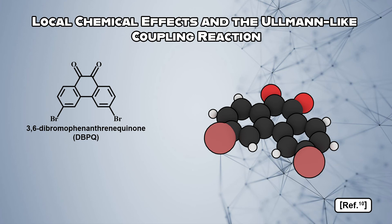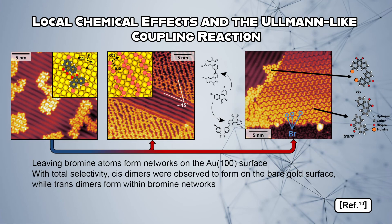We studied the Ullmann-like coupling reaction of 3,6-dibromophenanthrenequinone, or DBPQ, on a gold-100 surface. Following thermal annealing, the leaving bromine atoms were found to form self-assembled islands and modify the surface reconstruction. Cis-dimers formed on the bare gold surface, while trans-dimers were observed within bromine networks with total selectivity.